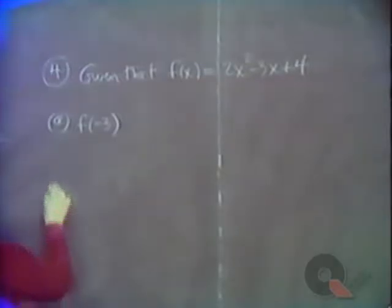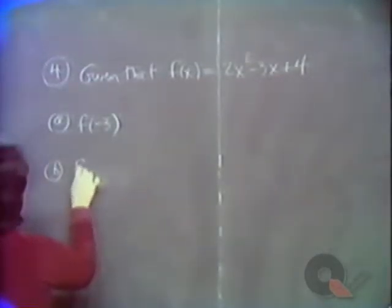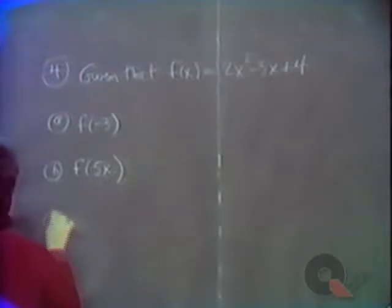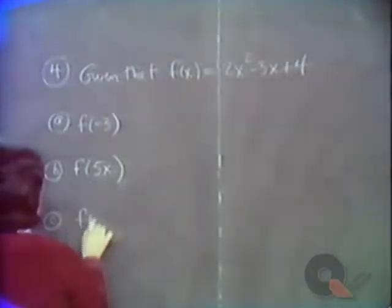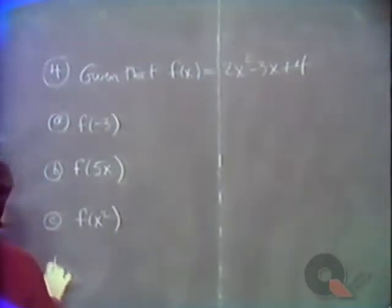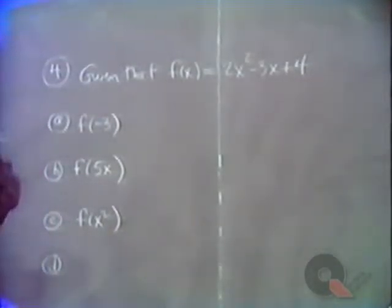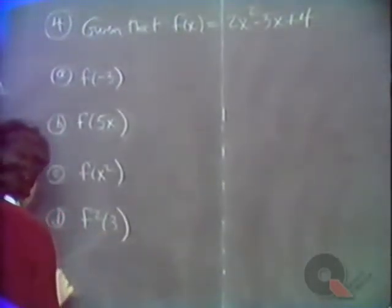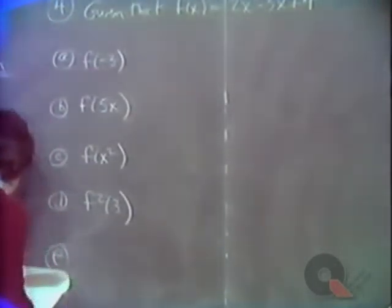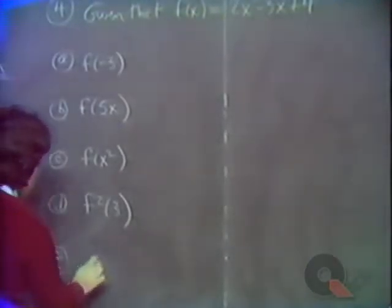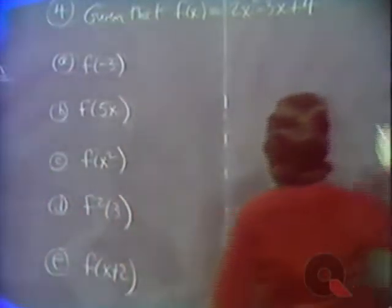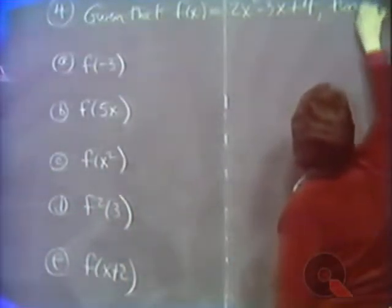Also: b, f of 5x; c, f of x squared; d, f squared of 3; and e, f of x plus 2. Given that this is the function, we want you to find each of the following.